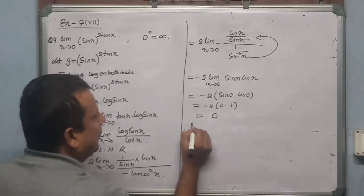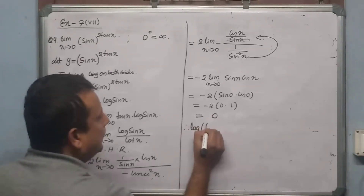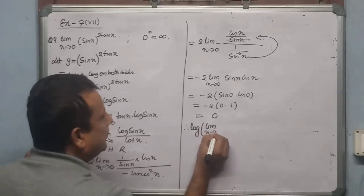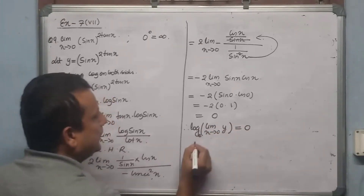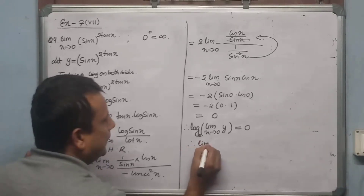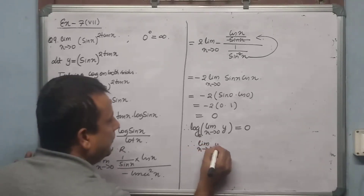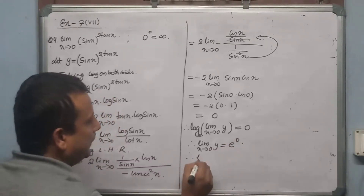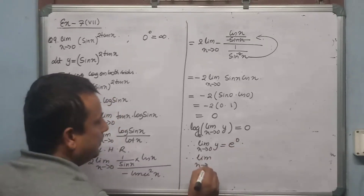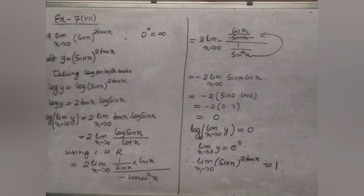Therefore log(limit x→0 of y) = 0. Since the base is e, using the exponential property: limit x→0 of y = e^0 = 1. The final answer is: limit x tends to 0 of (sin x)^(2tan x) = 1.